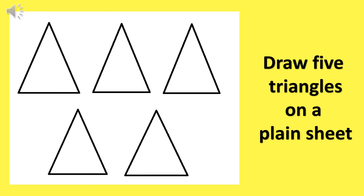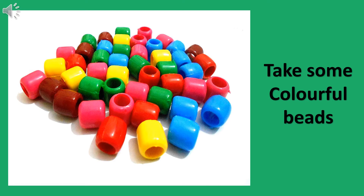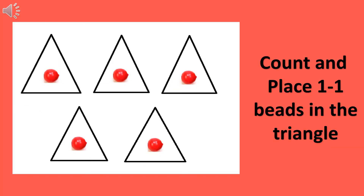Children, we are going to learn how to count from number one to ten. Let's take a plain sheet. Draw five triangles on it. Take some colourful beads. Now you have to count and place one bead in each triangle. Let's start counting: one, two, three, four, and five.